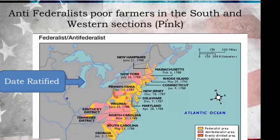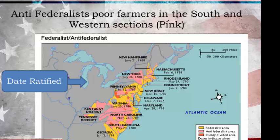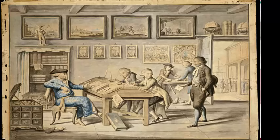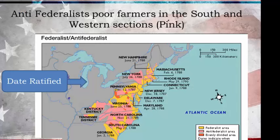Here we see a map with the dates of ratification for each state and where most of the Anti-Federalists and Federalists were located. The small farmers — shown in pink — were mostly in the southwestern areas, while the Federalists were located on most of the coast, especially up north. They were the people who wanted a strong central government to protect their merchant and trade interests. Located along the coast and doing a lot of trading with other countries, they were most likely to be Federalists.